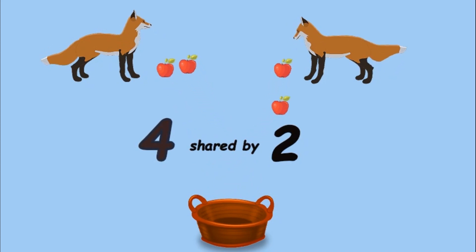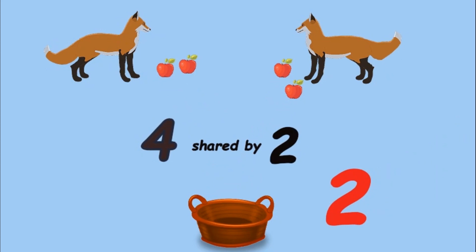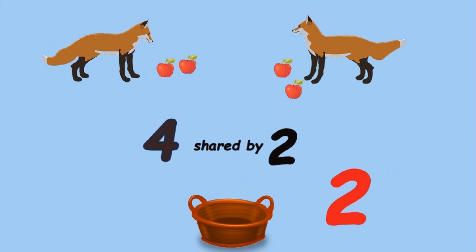Each fox has two apples, so four shared by two equals two.